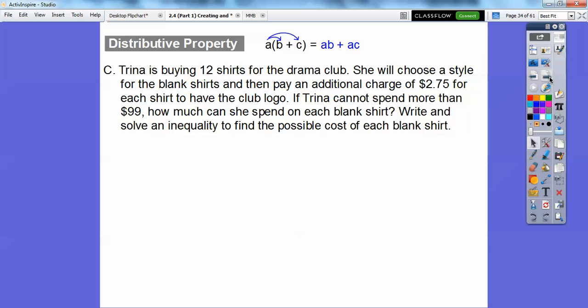Trina is buying 12 shirts for the Drama Club. She will choose a style for the blank shirts, and then pay an additional charge of $2.75 for each shirt to have the club logo. If Trina cannot spend more than $99, how much can she spend on each blank shirt? So we're going to let S represent the cost of each blank shirt, and we're going to write an inequality to represent that.